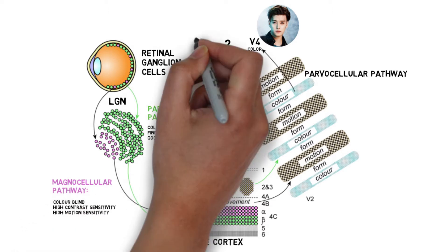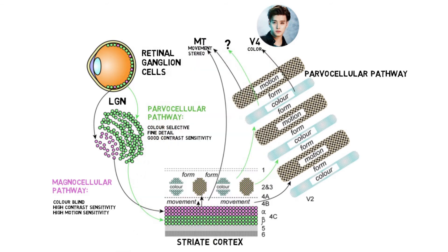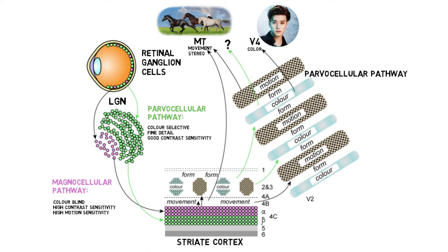For example, area MT is highly specialized for motion processing, with cells sensitive to motion over a very large spatial area and are organized into columns of differently directionally tuned cells.